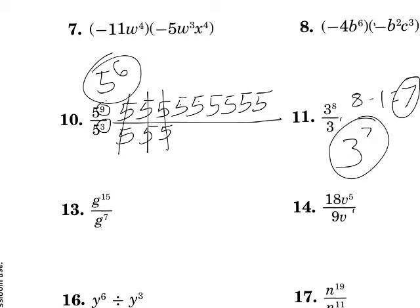I'm simply going to look at this as 18 and 9. So I'm going to reduce both of those by 9. I'm going to end up with 2 over 1. 2 over 1. Now I'm going to take 5, the top, minus 1, the bottom. So it's going to be V to the fourth.